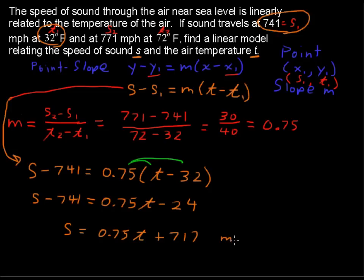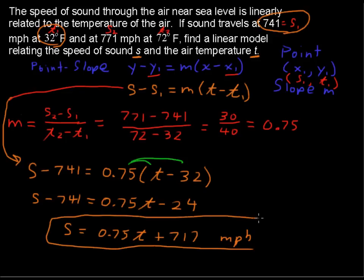And I'm going to put here miles per hour. Alright, just a few comments about that. We finished the problem, but let's talk about what this means here. So if the temperature T in Fahrenheit is 0 degrees, we would expect the speed of sound to be 717 miles per hour. If T is 0, then this term goes to 0 and we have 717 left.